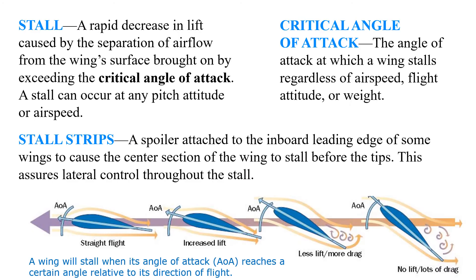A stall is a rapid decrease in lift caused by the separation of airflow from the wing's surface, brought on by exceeding the critical angle of attack. A stall can occur at any pitch attitude or airspeed. The critical angle of attack is the angle of attack at which a wing stalls regardless of airspeed, flight attitude, or weight. Stall strips are spoilers attached to the inboard leading edge of some wings to cause the center section of the wing to stall before the tips, assuring lateral control throughout the stall.